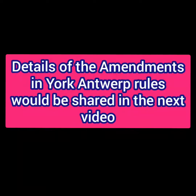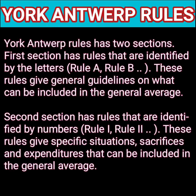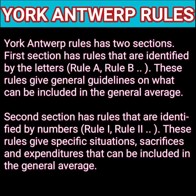Sticking to the York Antwerp Rules, it has two sections. The first section has rules identified by letters, giving general guidelines on what can be included in the general average. These lettered rules start from Rule A up to Rule G. In the second section, rules are identified by numbers — starting from Rule 1 to Rule 23, there are 23 numbered rules. These rules give specific situations, sacrifices, and expenditures that can be included in general average. I will go into the details of all these rules in my next video.